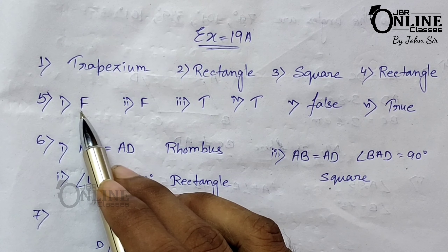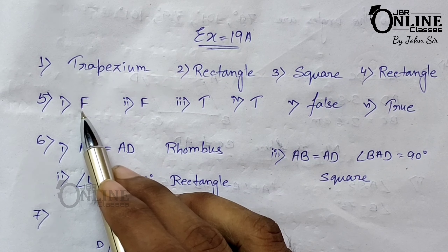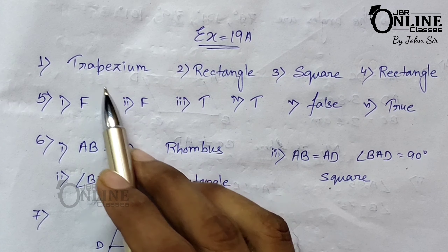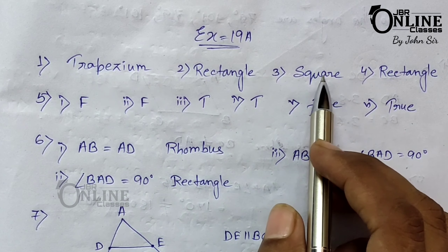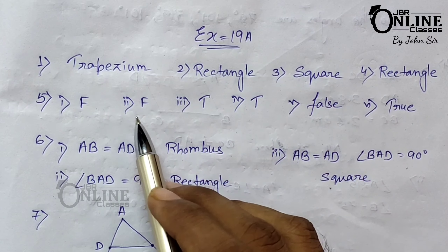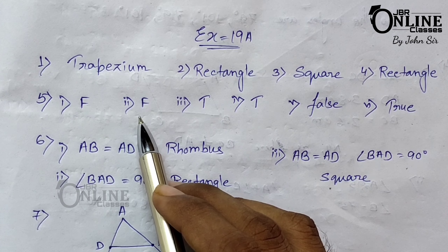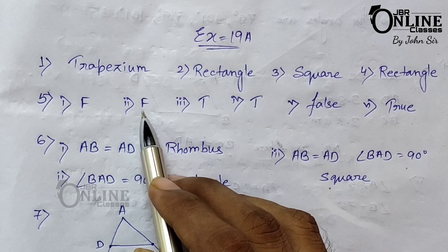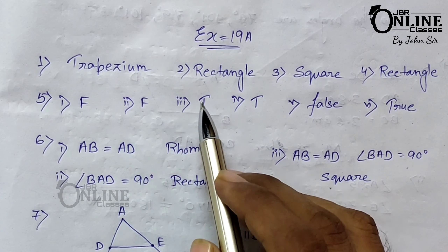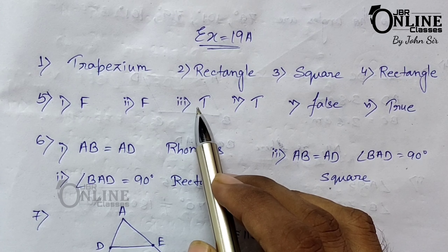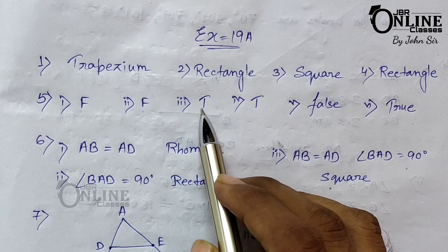Number five, true or false: every quadrilateral is a parallelogram. It's false, because not every quadrilateral is a parallelogram — they might be a rectangle, trapezium, or square. Next: every parallelogram is a rhombus — that's also false.